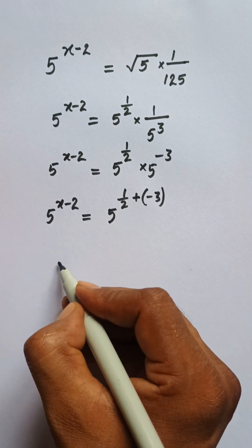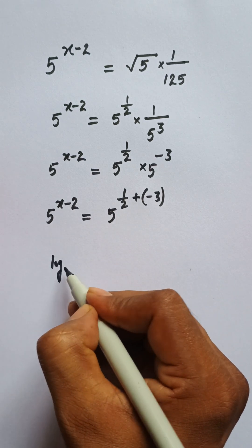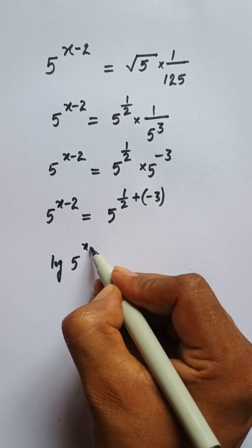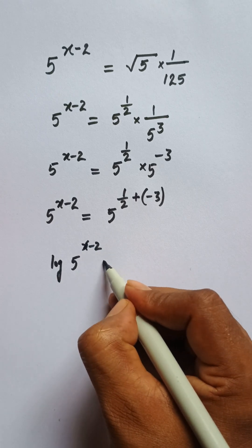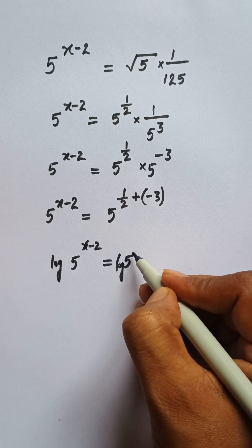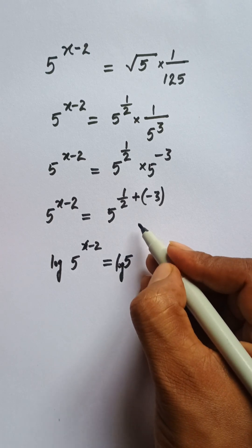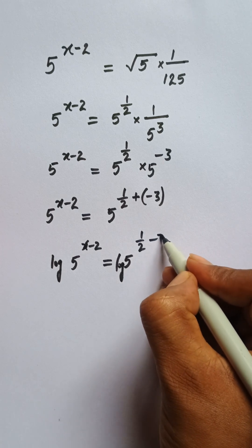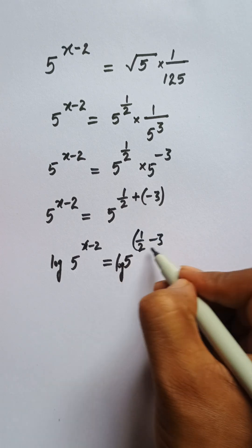Here you can see that the bases are the same, so I can take log on both sides: log 5 to the power x minus 2 equals log 5 to the power 1/2 minus 3, right?